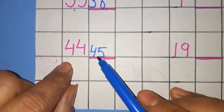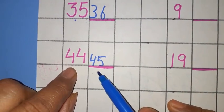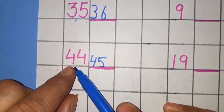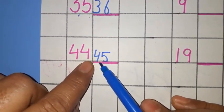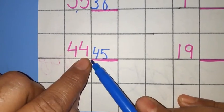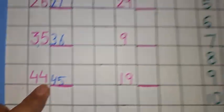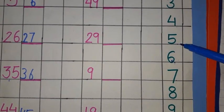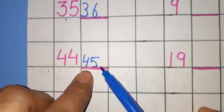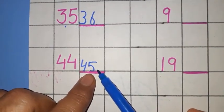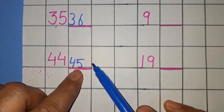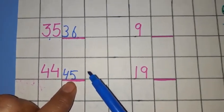For the last number, 44. Write the first 4 as it is. And for the second 4, find out what comes after 4. So, it is 5. So, write down 5 here. It becomes 45. So, students, in this way, you have to do it.